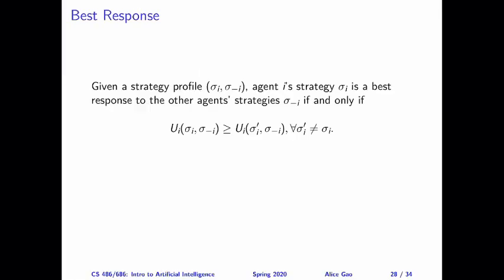The concept of Nash equilibrium is based on the idea of best response. Best response is defined as follows. We have a strategy profile consisting of a strategy for player i and strategies for all other players. We can claim that strategy sigma_i is a best response to all other agents' strategies if the following inequality holds: fixing the other agents' strategies, sigma_i is compared with any other strategy sigma_i prime for agent i.